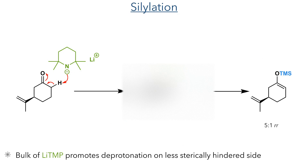With this product in hand, they then silylated it using lithium tetramethylpiperidide and TMS chloride. Lithium-TMP is quite a bulky base, and preferentially deprotonates the molecule on the less sterically hindered side. The resulting enolate then reacts with TMS chloride, forming the silyl enol ether with a 5-to-1 diastereomeric ratio.